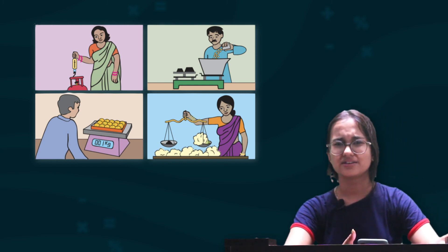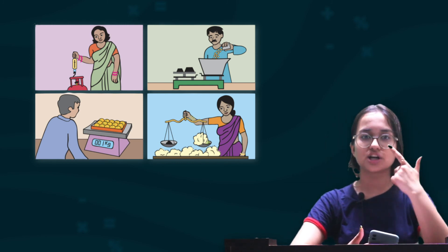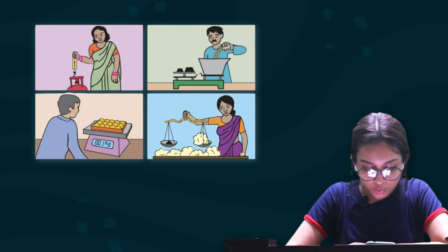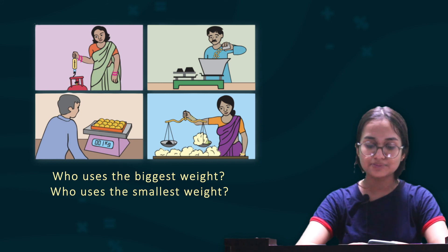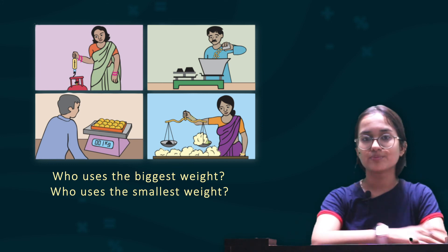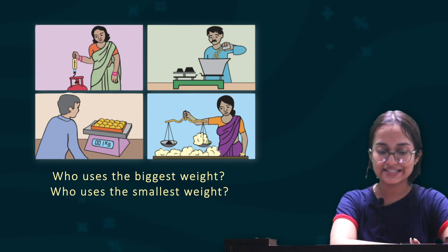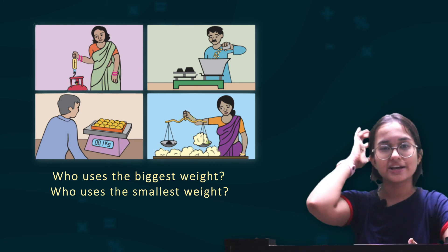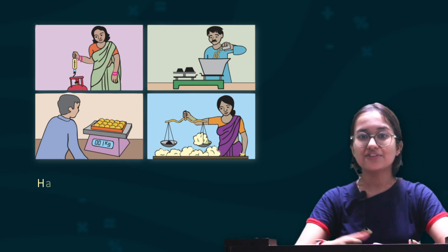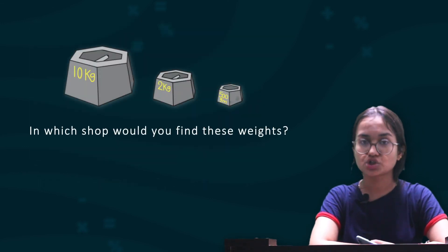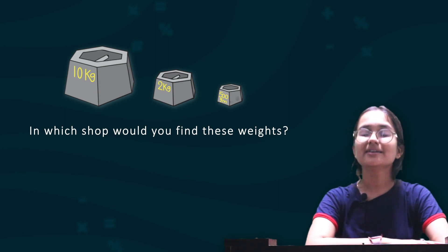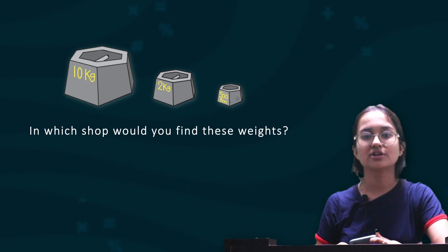At the end of the chapter, we look for weights and balances. Make a trip to your nearby junk dealer — observe who uses the biggest weight and who uses the smallest weight, and whether you have seen any of these balances. The junk dealer might use the biggest weights for heavy items, while grocers use small weights for smaller quantities. We find these weights in different shops as shown in the pictures. With this, we have come to the end of the chapter. We will see the next chapter in the next video. Thank you.